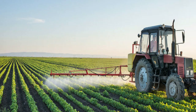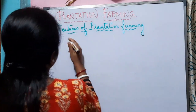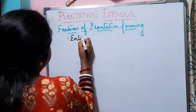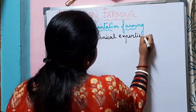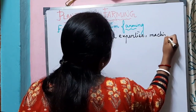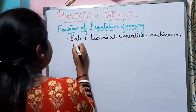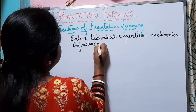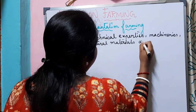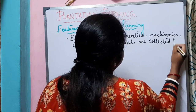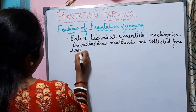In plantation farming, modern inputs and modern machineries are used at a large scale. The entire technical expertise, machineries, and infrastructural materials are collected from foreign countries.